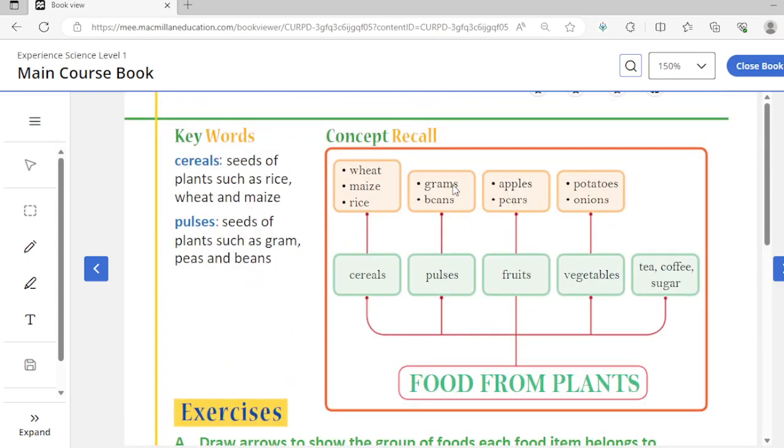So let's quickly recap what we learned. We get food from plants, right? This food is of different types: cereals, pulses, fruits, vegetables, tea, coffee and sugar. In cereals we have examples like wheat, maize, rice - these are all examples of cereals.